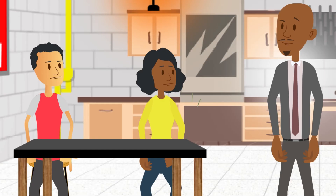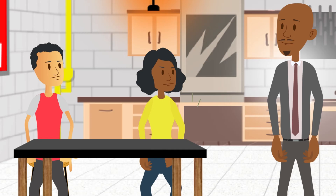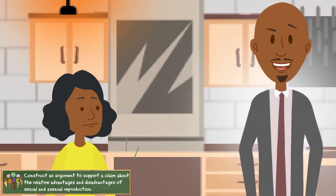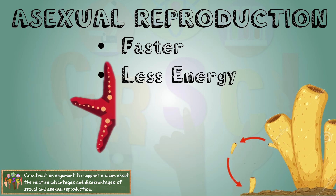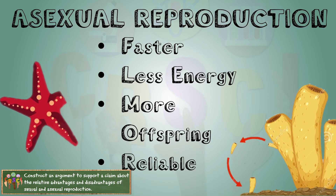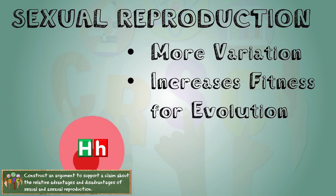Some organisms can reproduce alone — it's called asexual reproduction. For organisms like bacteria and sponges, it's faster than sexual reproduction, requires less energy, and you can produce more offspring. It's most reliable because you don't need another partner.